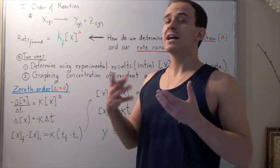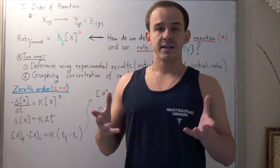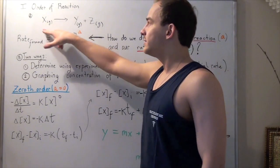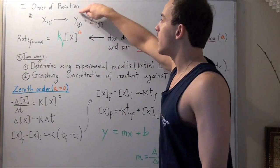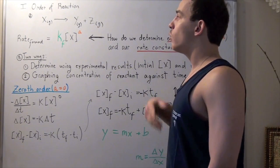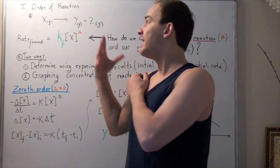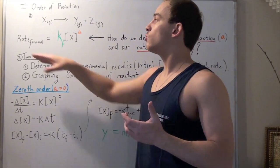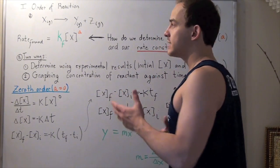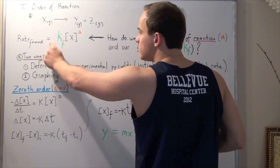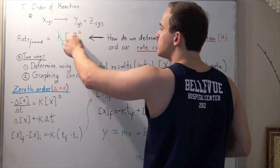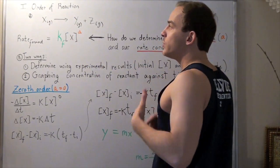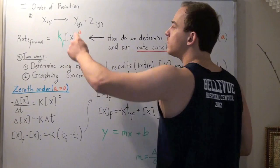We already spoke about the order of reactions without actually mentioning what that is. Let's look at the following simple, elementary, irreversible reaction that only goes in one direction. Our reactant X in a gas state reacts in a single step to produce two products, Y and Z, also in a gas state. The rate law of any reaction is a mathematical representation of the relationship between the concentration of the reactant and our rate of reaction. The general form is: rate of forward reaction equals the forward rate constant times the concentration of reactant to some power A. This A represents the order of our reactant, and since the only reactant is X, A represents the order of the entire reaction.